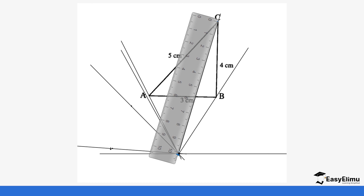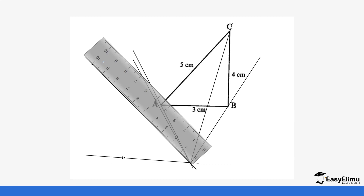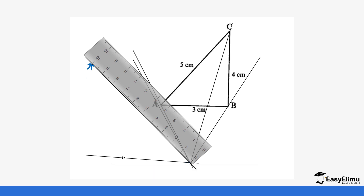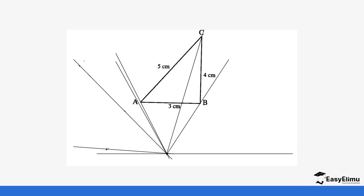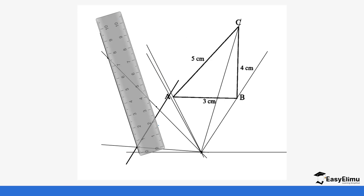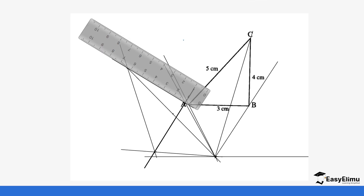Use the same distance from O to locate C' on the new line. You can see this is where C' is as indicated. Make the mark — this is our C'. So we now have B', A', and C'. The next step is to join all these points. Join A' to B', then join A' to C' and B' to C'.